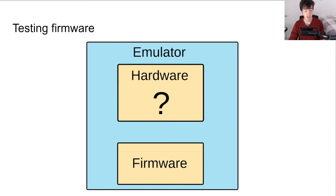When we have the firmware running in an emulator without the hardware, the code will not run properly. This is because the firmware is going to expect to interact with the peripherals — for example, by reading from the peripherals' device registers — but the emulator will not understand how to respond in these interactions. This will cause the firmware's execution to grind to a halt as it waits for expected behavior, inhibiting any attempt to further analyze the firmware.